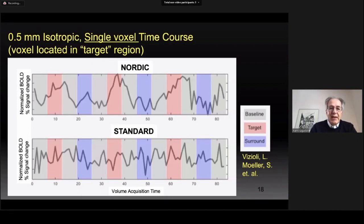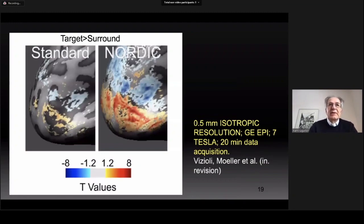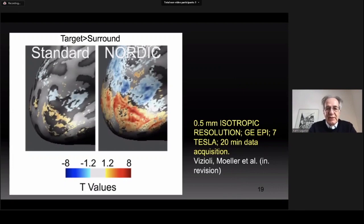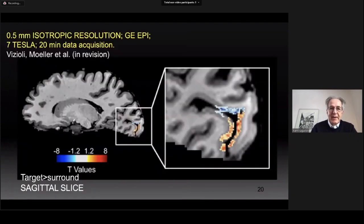When we look at the time courses, for the standard image we really cannot detect any kind of activation, but with NORDIC you can see the activation very clearly after denoising. These are the functional maps obtained from this data. As expected, the standard image gives a very poor, incomplete functional map, but with NORDIC reconstruction you can see the target in red and the surround area in blue with a clear, linear demarcation between them on the flat cortex.